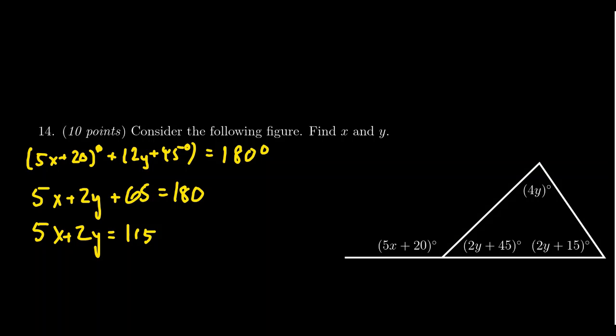But now we have two variables, x and y. So there's really not much more we can do with that. Maybe we can find some more information in this problem. Another thing to notice here is that we have this triangle right here. We know that the sum of the three angles of a triangle add up to 180 degrees. And you'll notice that each and every one of these angles only involves the variable y. So maybe that's what we do next here.